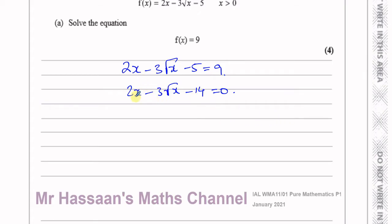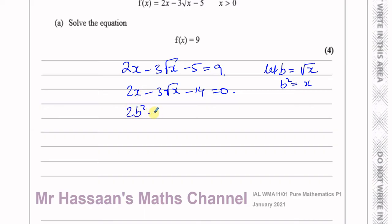I know that x is the square of root x, so it's kind of like a quadratic equation. To make it clear, let's say let b equal the square root of x. In that case, if I square b, I get x, so I can replace x with b squared. So I've got 2b squared minus 3b minus 14 equals 0. Now I have a quadratic equation.